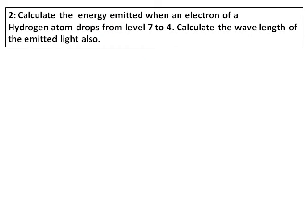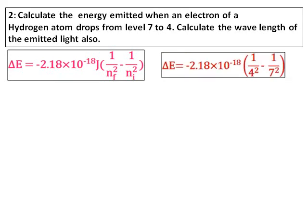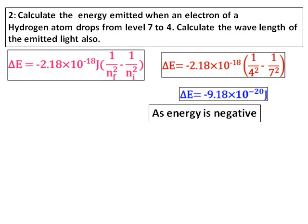Calculate the energy emitted when an electron of a hydrogen atom drops from level 7 to 4, and also calculate the wavelength of the emitted light. As usual, use the delta E hydrogen equation. Here the final level is 4 and the initial level is 7. Substitute the values and get the value of delta E. The value of delta E is negative, therefore energy is released.